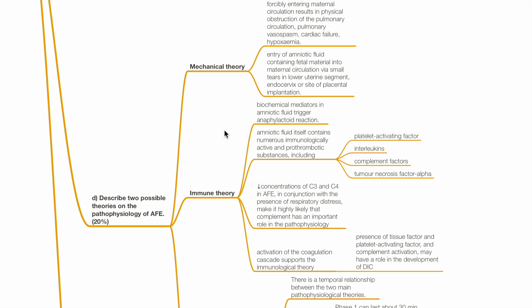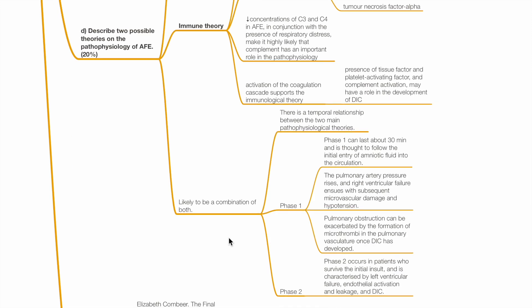The immune theory states that biochemical mediators in amniotic fluid trigger an anaphylactoid reaction. Amniotic fluid contains numerous immunologically active and pro-thrombotic substances such as platelet activating factor, interleukins, complements and TNF-alpha. Reduced concentrations of C3 and C4 in AFE, in conjunction with the presence of respiratory distress, makes it highly likely that complement has an important role in the pathophysiology. Activation of the coagulation cascade supports the immunological theory. It is likely that the pathophysiology of AFE involves a combination of both theories.